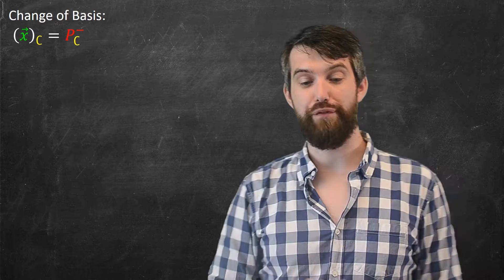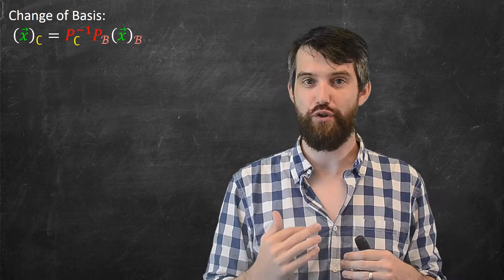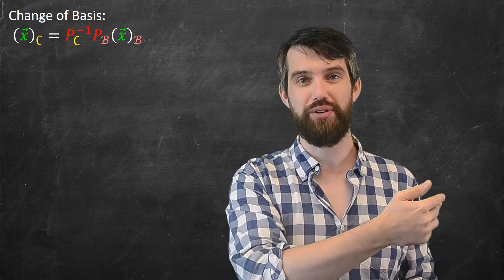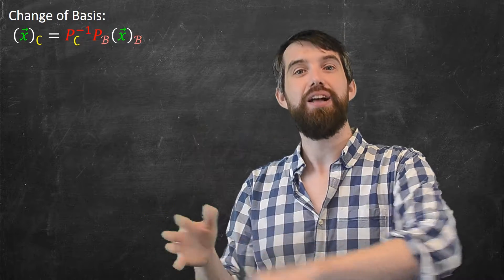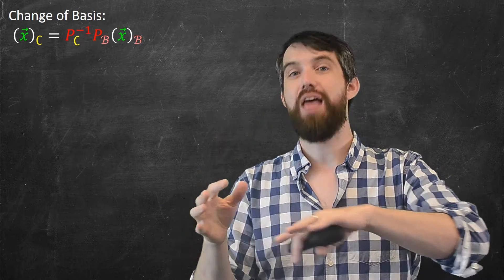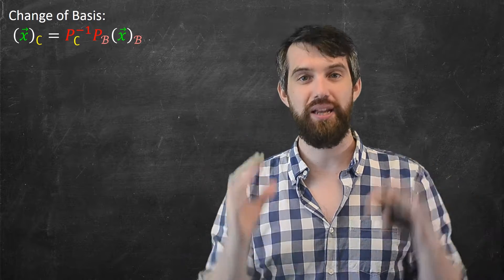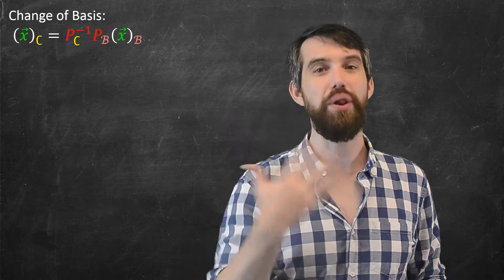We've seen this formula before. This is the change of basis formula and it's a multiplication of different matrices. I start with xb, then I'm going to multiply by pb, and then I'm going to multiply by pc inverse. So what's exactly going on in each level?